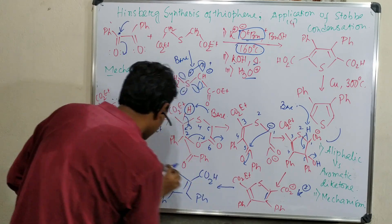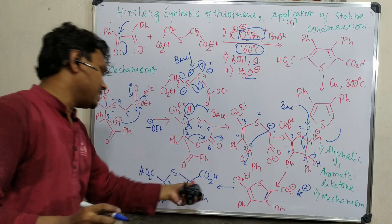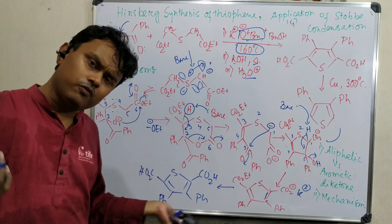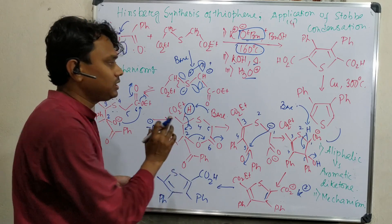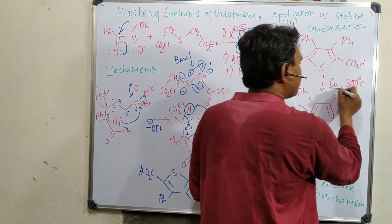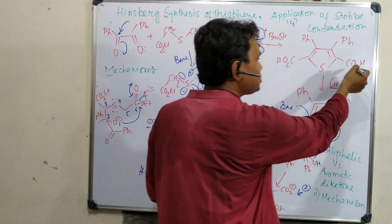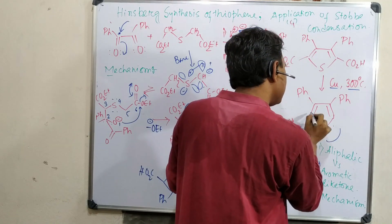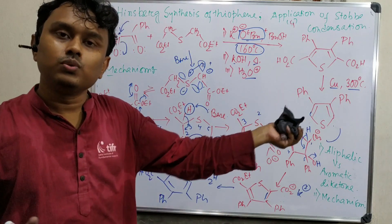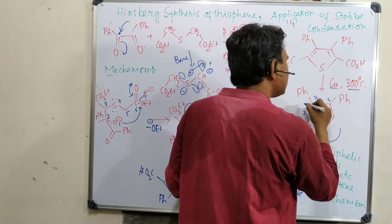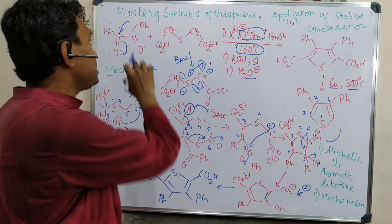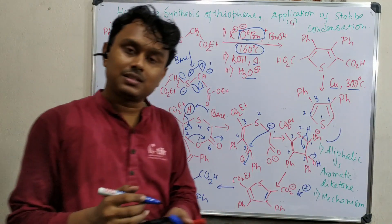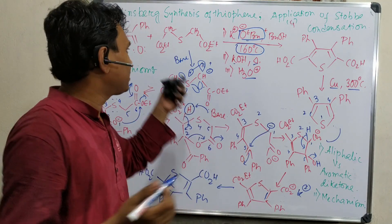After the next step with H3O-plus, this will produce carboxylic acid. So the overall reaction ultimately produces this dicarboxylic acid diphenyl substituted. Now the question: if we need this material directly, okay, we have achieved it. But if we don't need it and we need thiophene only, there is a strategy. In presence of copper, if it is heated under 300 degrees centigrade, then decarboxylation will occur and ultimately our target thiophene is produced.